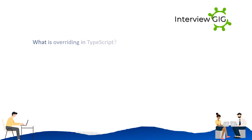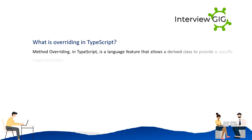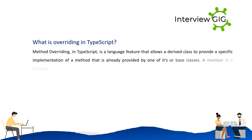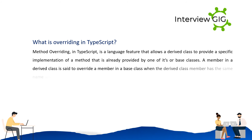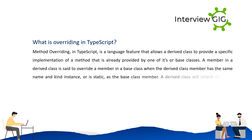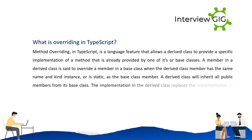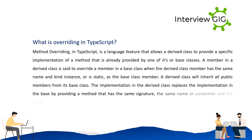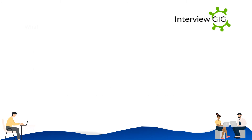What is overriding in TypeScript? Method overriding is a language feature that allows a derived class to provide a specific implementation of a method already provided by one of its base classes. A member in a derived class overrides a base class member when it has the same name, kind, and signature. A derived class inherits all public members from its base class, and the overriding implementation must match the same name, parameters, and return type as the base class method.